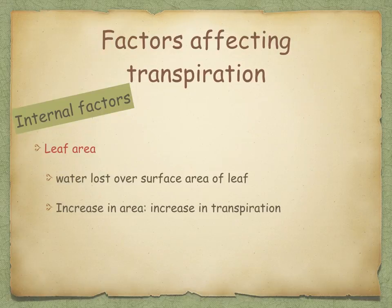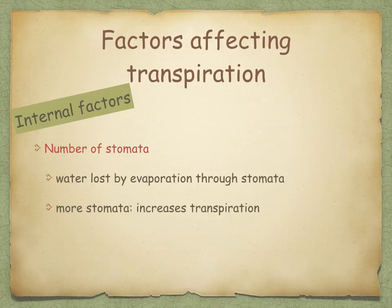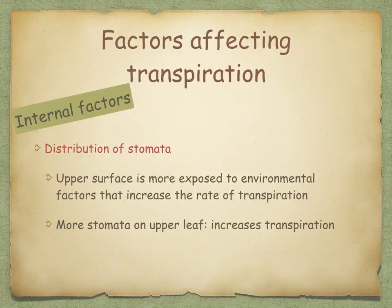Internal factors include leaf area — water is lost over the surface area of the leaf, so an increase in area increases the rate of transpiration. The cuticle forms a waterproofing layer over the leaf surface, so a thicker cuticle decreases transpiration. More stomata increase transpiration since water is lost through them. Finally, distribution of stomata matters: the upper surface is more exposed to environmental factors, so more stomata on the upper surface increases transpiration.